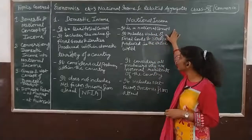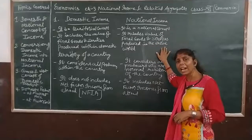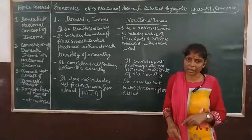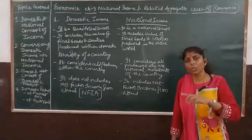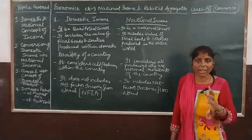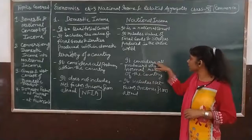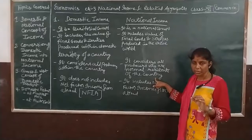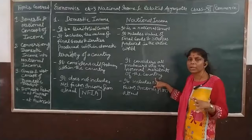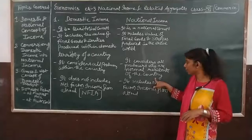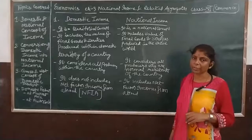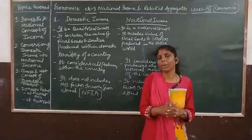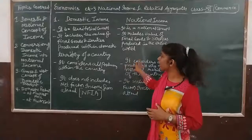So national income is a national concept. It includes the value of final goods and services produced in the entire world, but only by normal residents of the country. It considers all producers who are the normal residents of the country, wherever they are in the entire world — they will be counted in the national income. It includes net factor income from abroad. Make your domestic territory concept and your normal residence concept very clear, then you will understand this very easily.